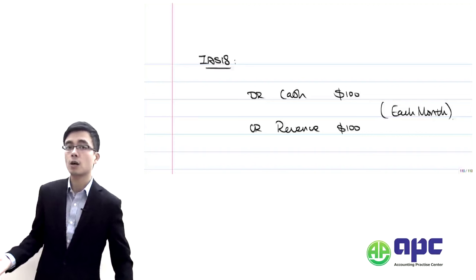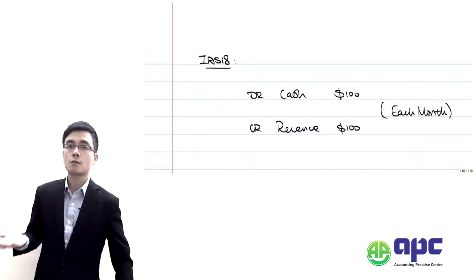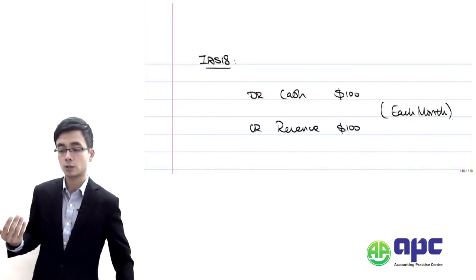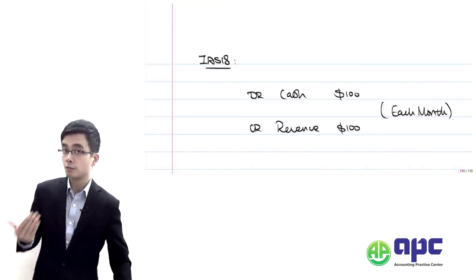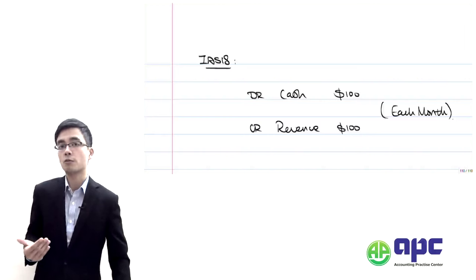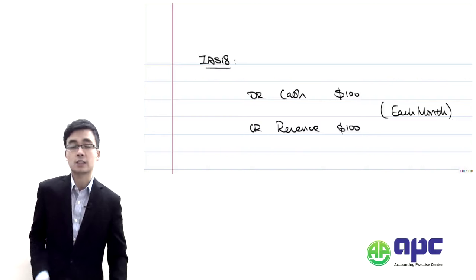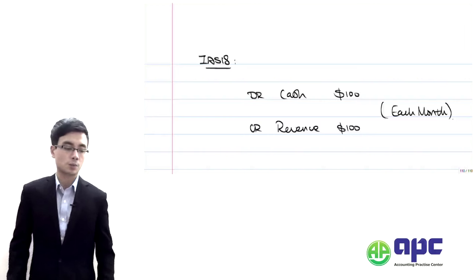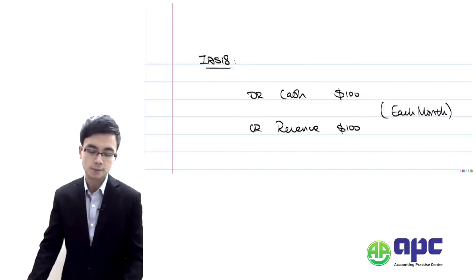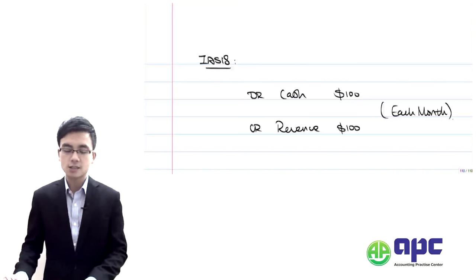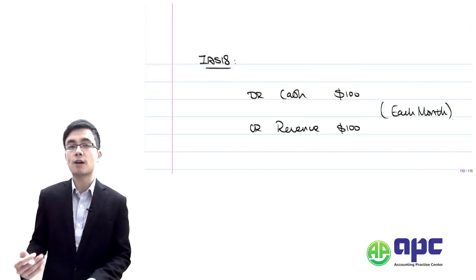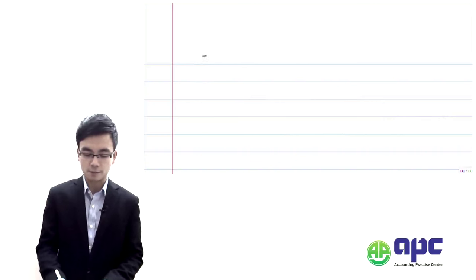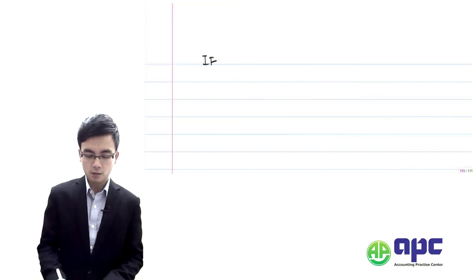As the latest accounting standard IFRS number 15 has come into being, of course it will affect quite a lot of things — it will affect the total revenue recognised, the tax payable, the profit, and the dividend payable as well. We're going to explain that. Now let's see how we're going to recognise this revenue under IFRS number 15 for this particular question.